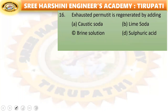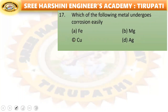Next: exhausted permutit is regenerated by adding — caustic soda, lime soda, brine solution, or sulfuric acid? Brine solution is the right answer. Exhausted permutit is regenerated by adding brine solution.